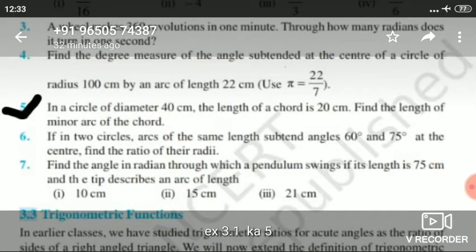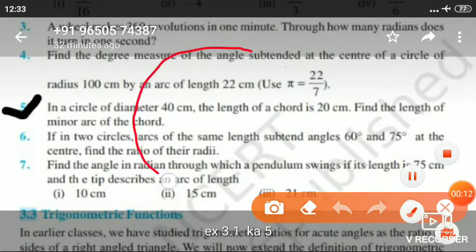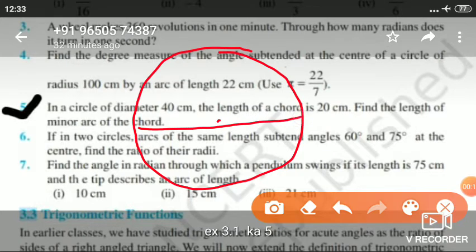We're starting exercise 3.1, question 5. Let's draw the diagram. Suppose this is the circle, and this is the center. The diameter is given as 40 centimeters, so AB equals 40 centimeters.